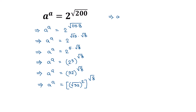So a to the power a is equal to square root of 32, all to the power of 2 times square root of 8. We get square root of 32, all to the power of 2 times square root of 8.